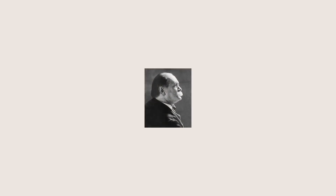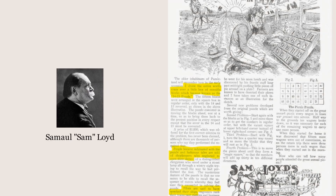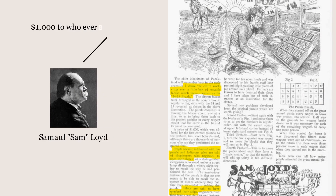In the 1870s, famous puzzle maker Sam Loyd offered $1,000 to the first person to solve what has become known as the 14-15 puzzle. According to him, he drove the entire world crazy over it — ludicrous tales were being told of shopkeepers who neglected to open their stores and pilots wrecking their ships, all trying to solve his puzzle.